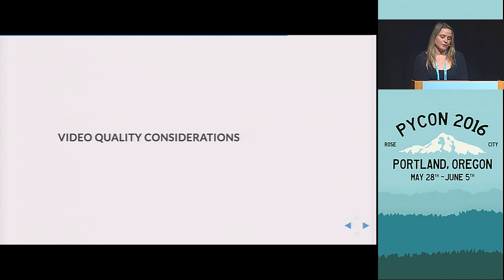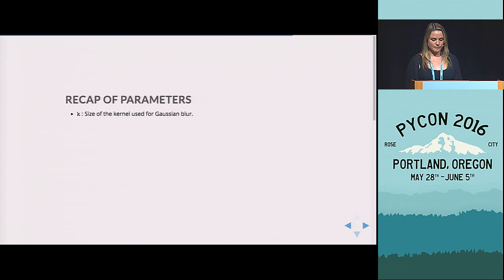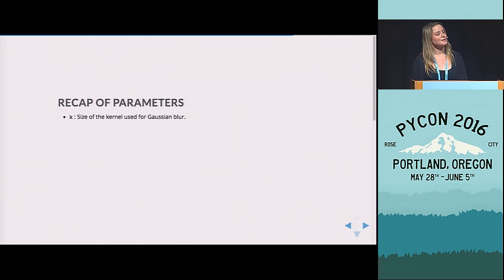So video quality considerations. So the Raspberry Pi is really great because it is cheap. We can deploy it easily. But it is very small, and it has limited storage and computational power. So you may want to reduce both the resolution and the frame rate of your camera to be able to really run this in real time. So I'm just going to talk about the effects of changing the frame rate and the resolution on some of the parameters that we were talking about.